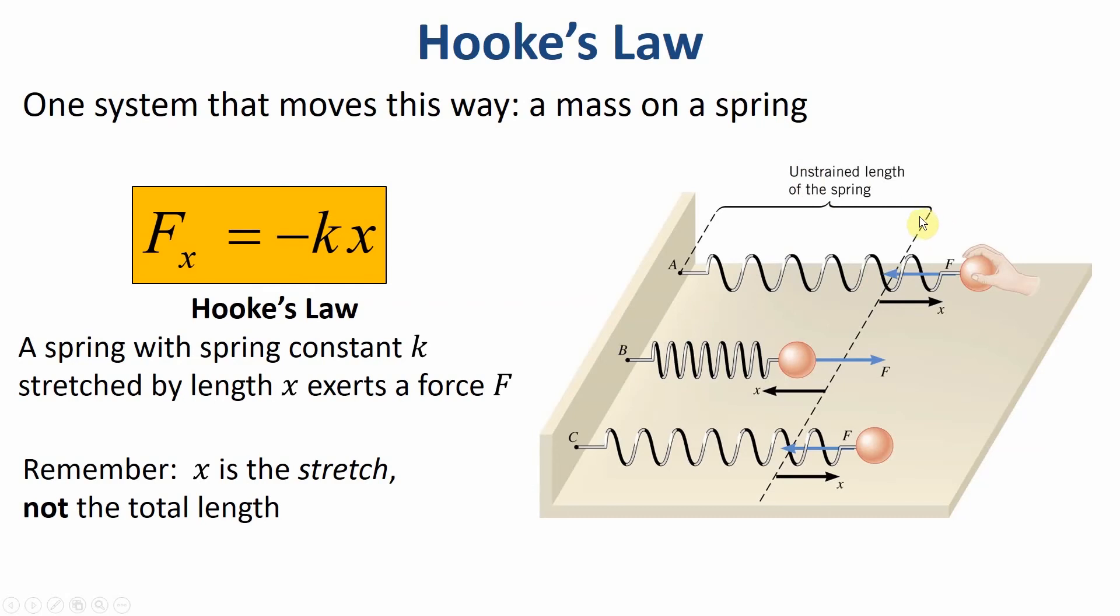If my spring has a natural resting point here along this line, x is not the distance of the spring. X is the distance from its natural resting point to where it is now. I have stretched it some distance x over where it wants to be. This minus sign in Hooke's Law says the force always points in the opposite direction of x. So if I pull it to the right, the force points back to the left. It's a restoring force always pointing me back towards equilibrium.